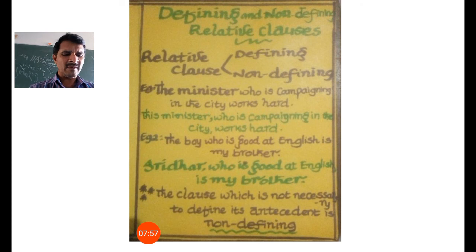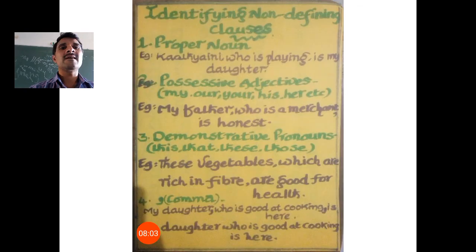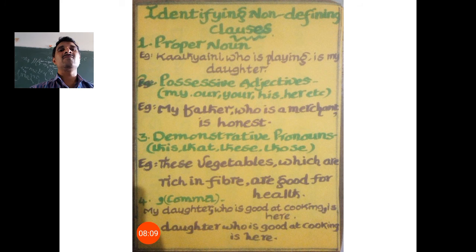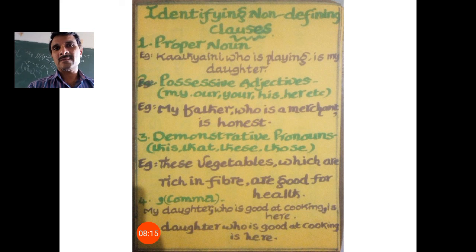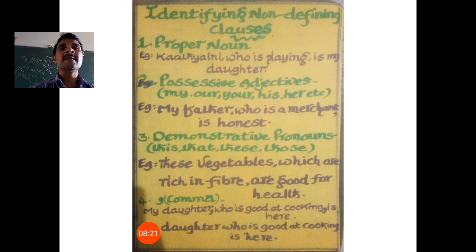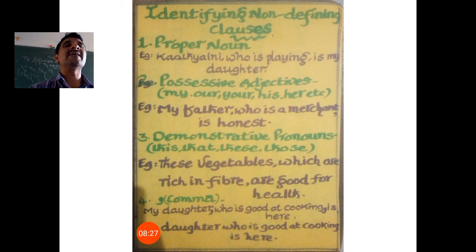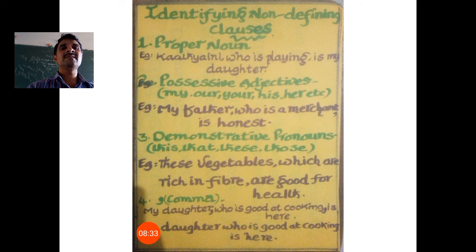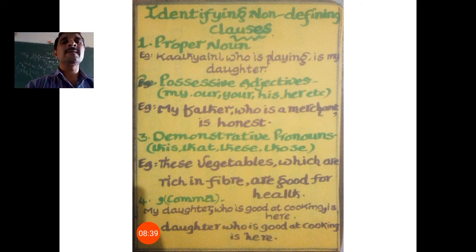You may ask: is there any clue to identify non-defining relative clauses? Yes. By the following clues, we can identify non-defining relative clauses. The first clue: proper nouns. For example, 'Katyaini, who is playing, is my daughter.' Here, Katyaini's identity is given. 'Who is playing' is additional information. Remove 'who is playing' and read: 'Katyaini is my daughter.' That is enough.